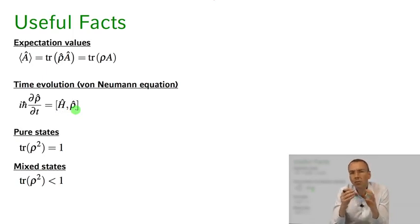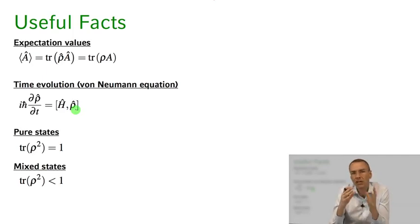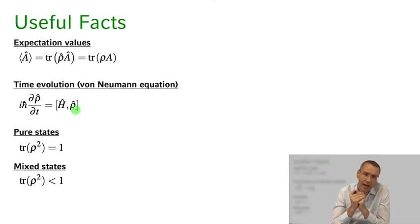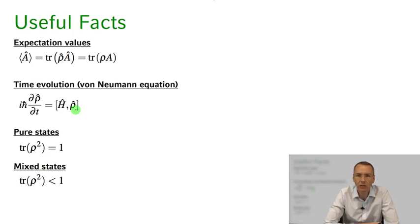Finally, to check whether your system is in a pure state or a mixed state: if you take the trace of rho squared and it equals one, the system is in a pure state. If the trace of rho squared is less than one, it's a mixed state. That's what I wanted to tell you today about the density operator and the density matrix. We're going to use this to describe a more general case of light-atom interactions in the next class. Thanks a lot for watching — see you next time.